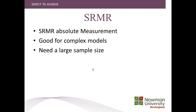The next one is SRMR, which is an absolute measure. It's good for complex models but you need a large sample size — potentially thousands. The paper I worked on and did some consulting analysis on was essentially a confirmatory factor analysis and we had over 5,000 students from across the world. That gives you a rough idea of the sort of sample size you need.